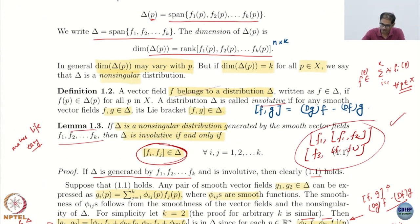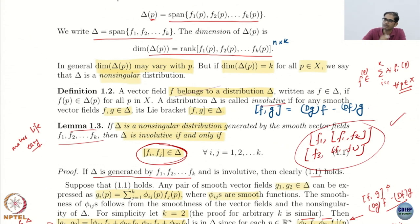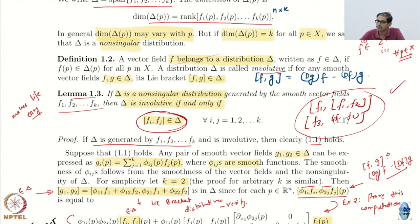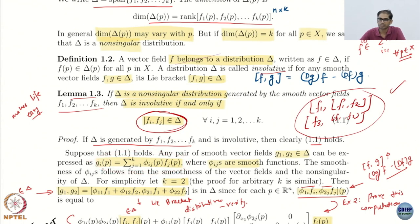The bigger question is: if you start with only their combinations being in delta, can you claim that the distribution is involutive as per this definition? How do we go about it? We take some two vector fields G1 and G2 in delta. Now the important thing is because G1 and G2 are in delta at all points, you should be able to write them as a linear combination of the fi's. That is the only way G1 and G2 can belong to delta.